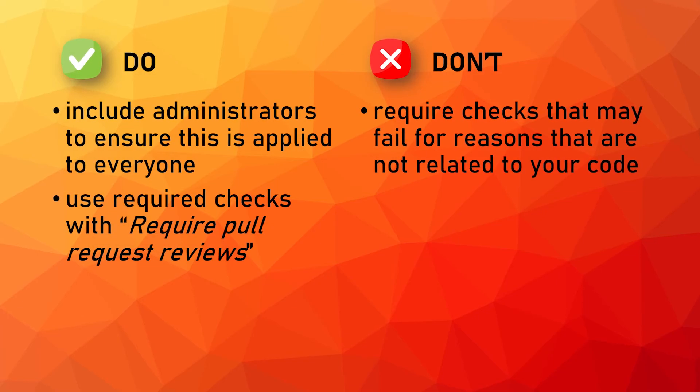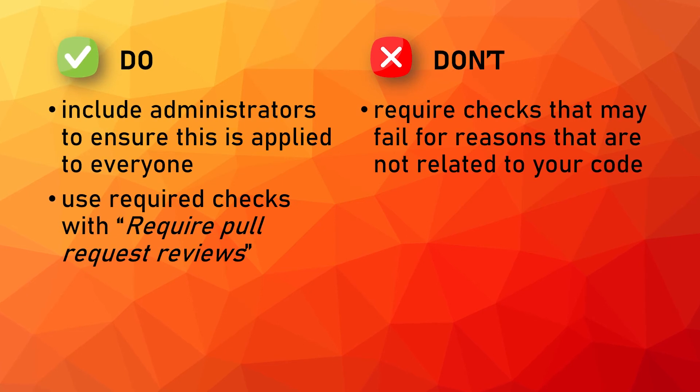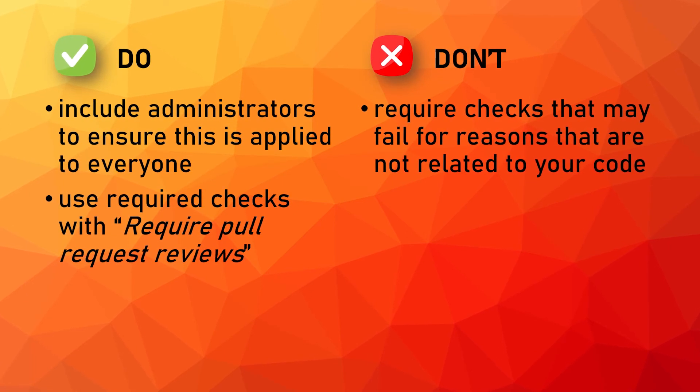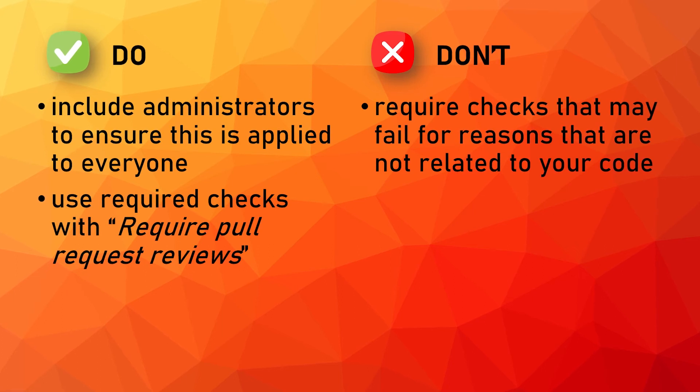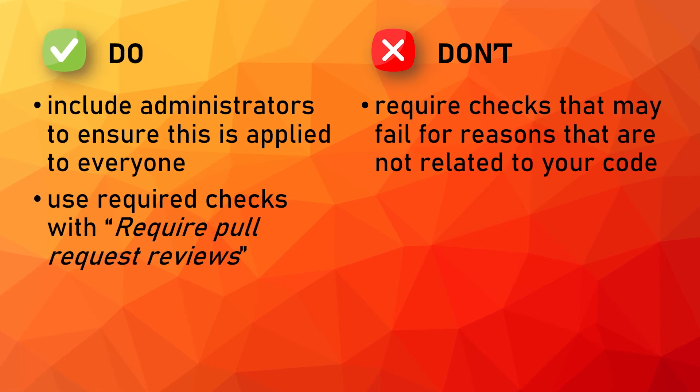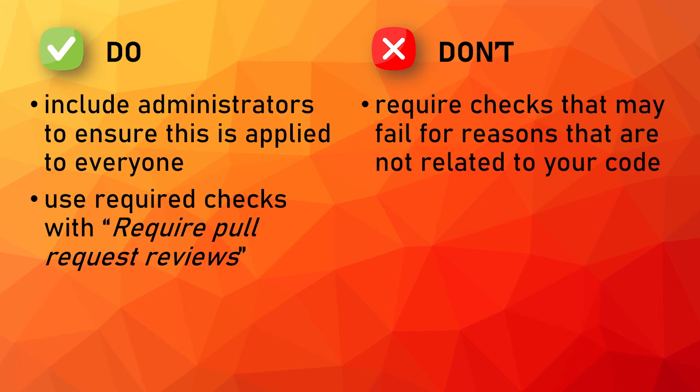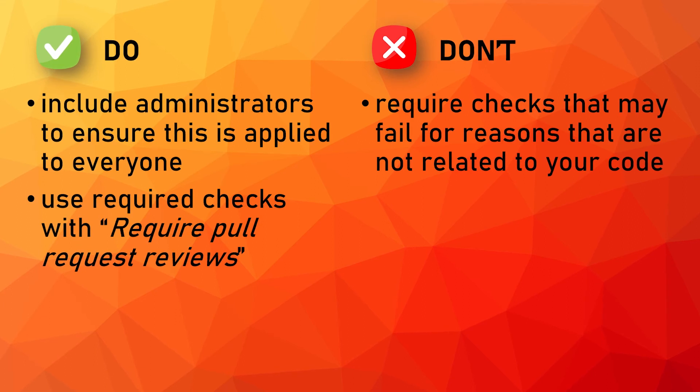You can also make sure that these checks are executed against the latest version of your code. If the target branch has changed since the pull request was opened, a message will appear indicating that you need to merge the upstream changes into the branch. Once the changes are integrated, a new build will be triggered and the status checks will be updated to reflect the latest state. The best practices here are: use the 'include administrator' checkbox to ensure this is applied to all collaborators. Also, use required checks in conjunction with 'require pull request reviews before merging' to achieve an effective pull request-based collaboration workflow. And be careful about the quality of your checks — you don't want to require checks that may fail for reasons unrelated to your code, like flaky tests or external dependencies.